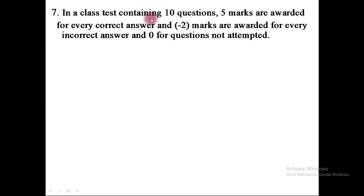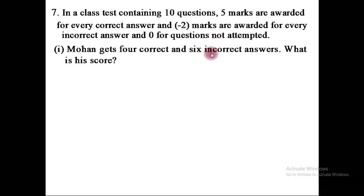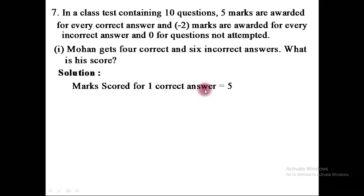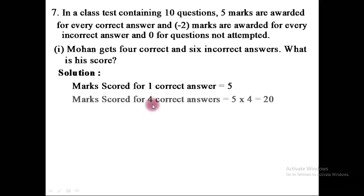In a class test containing 10 questions, 5 marks are awarded for every correct answer, minus 2 marks for every incorrect answer, and 0 for questions not attempted. Sub number 1: Mohan gets 4 correct and 6 incorrect answers. What is his score? The mark scored for one correct answer is 5 marks, so the total score for 4 correct answers is 5 into 4 equals 20 marks.